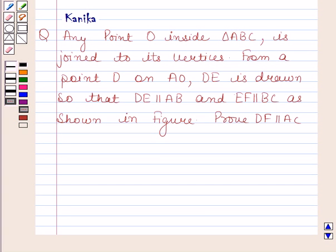Hi and welcome to the session. Let us discuss the following question. The question says any point O inside triangle ABC is joined to its vertices from a point D on AO.